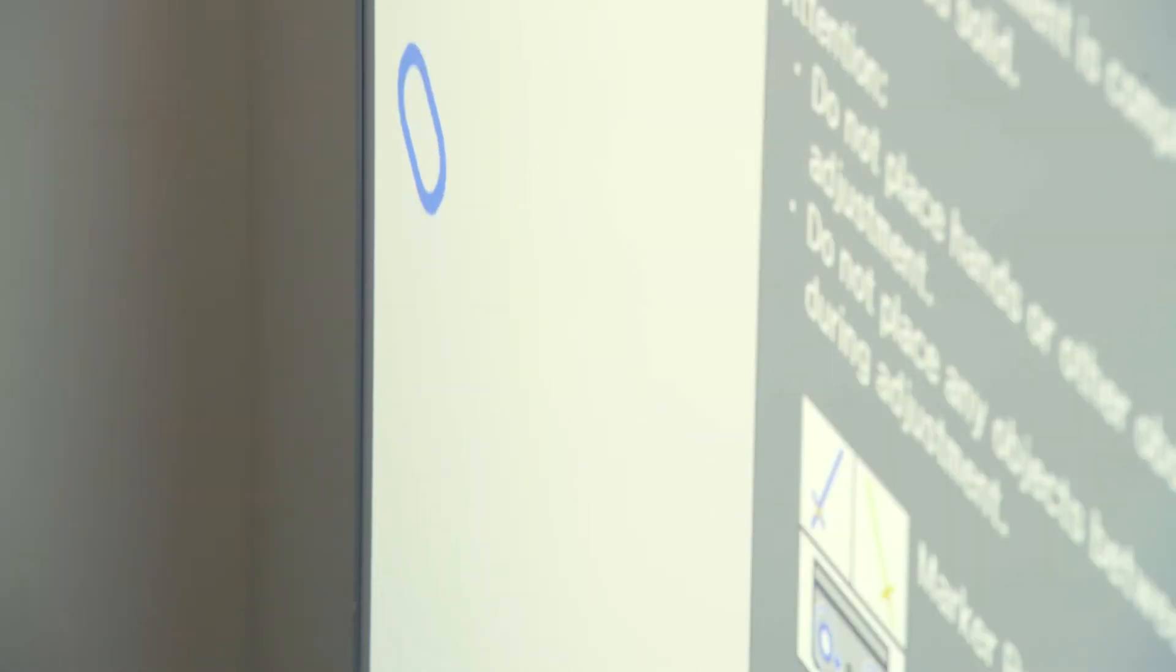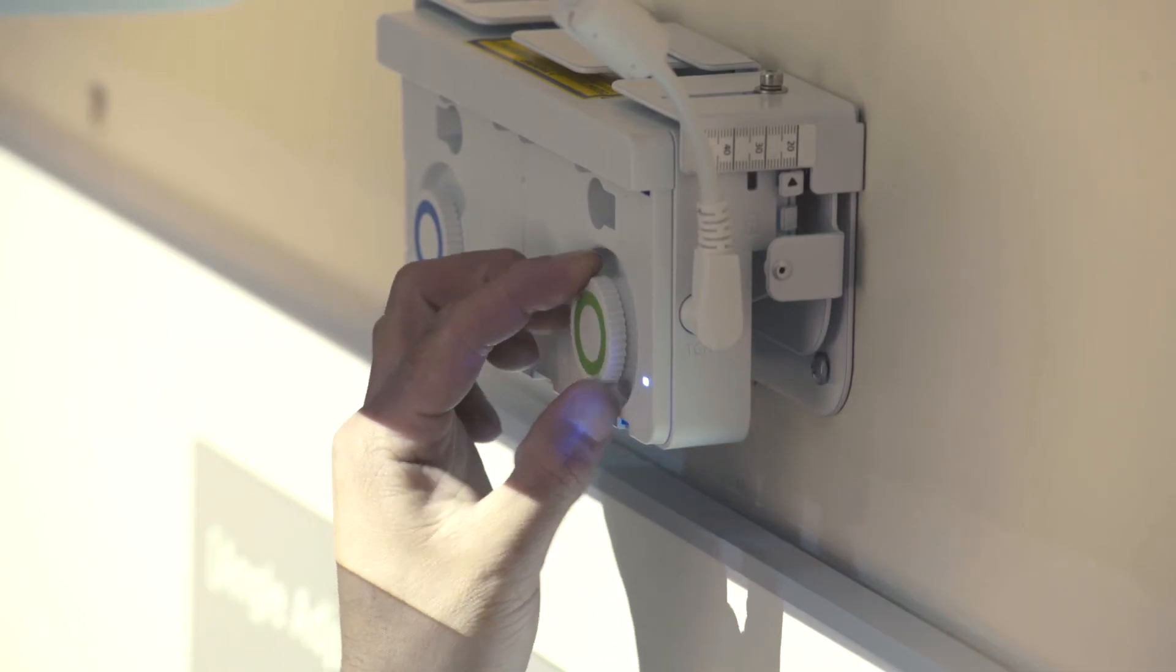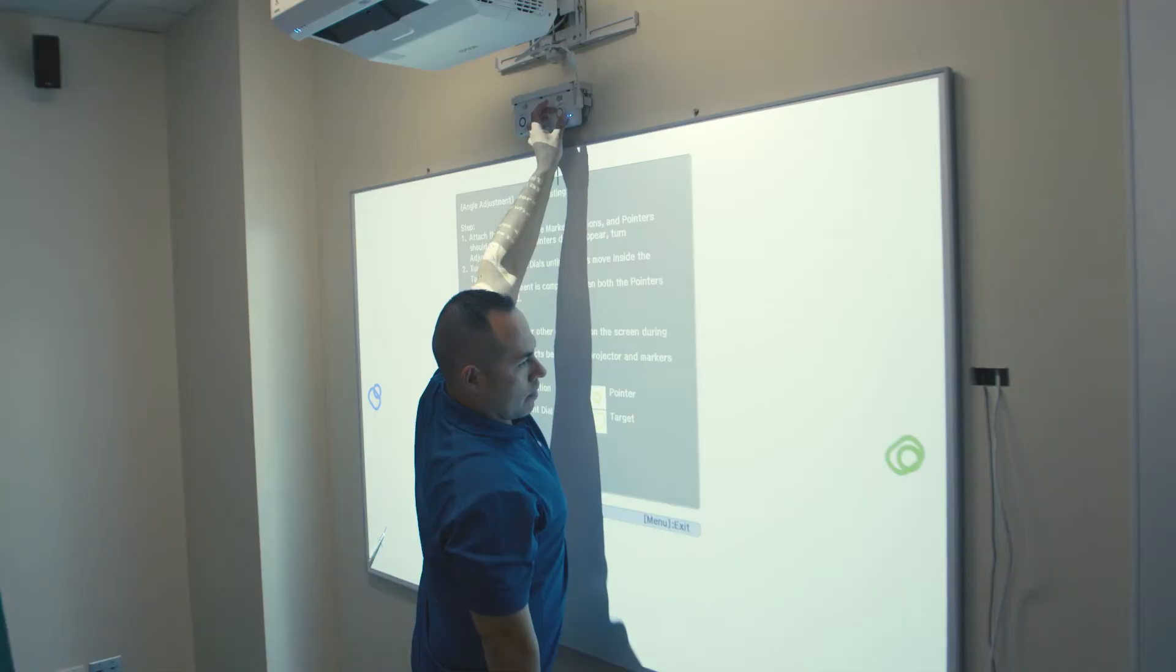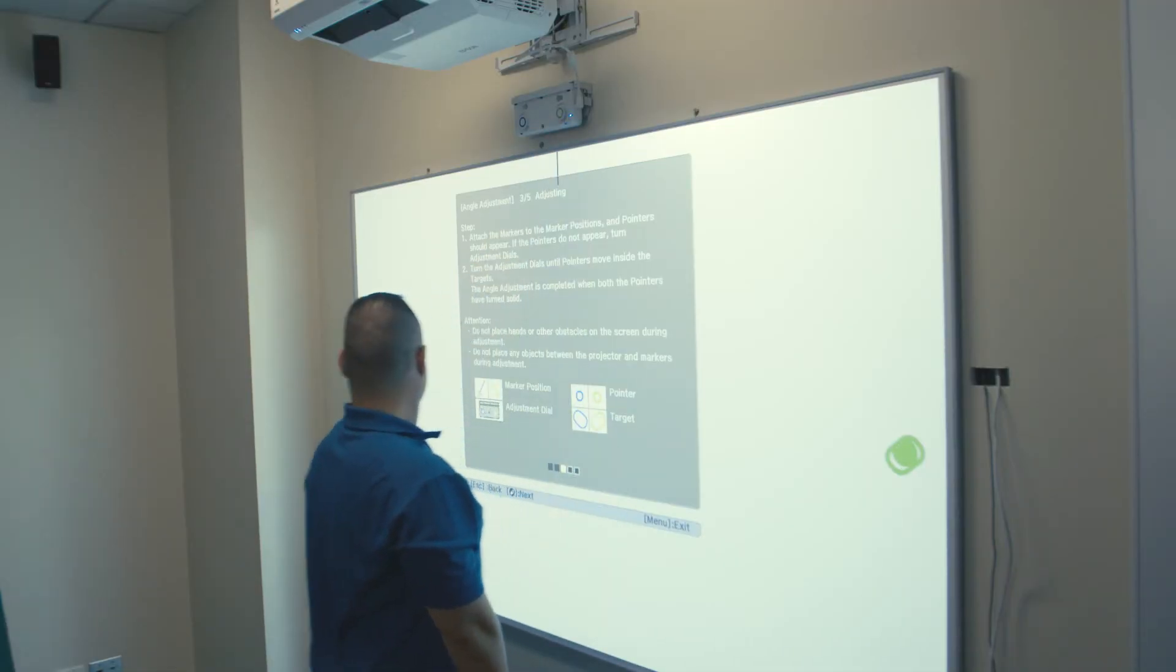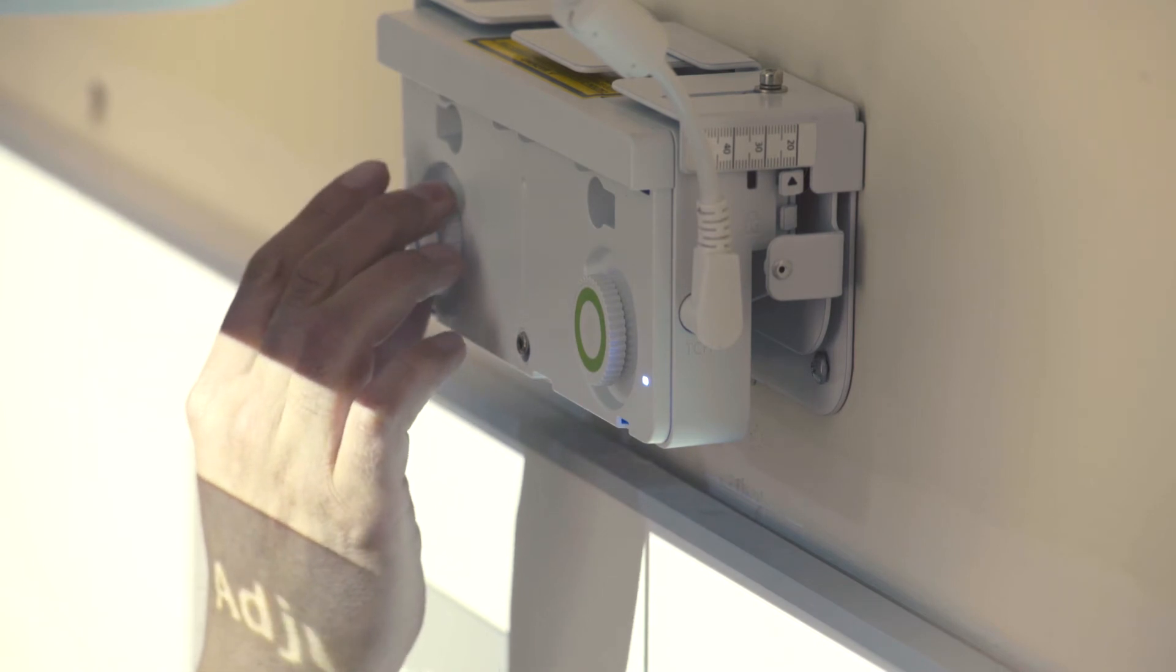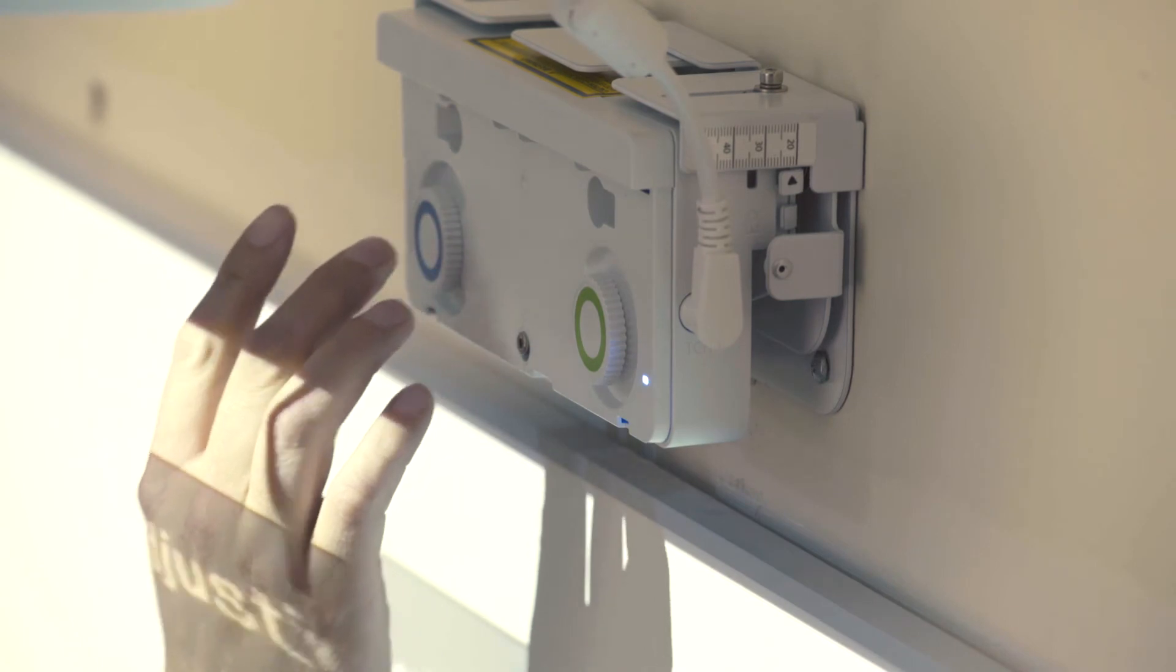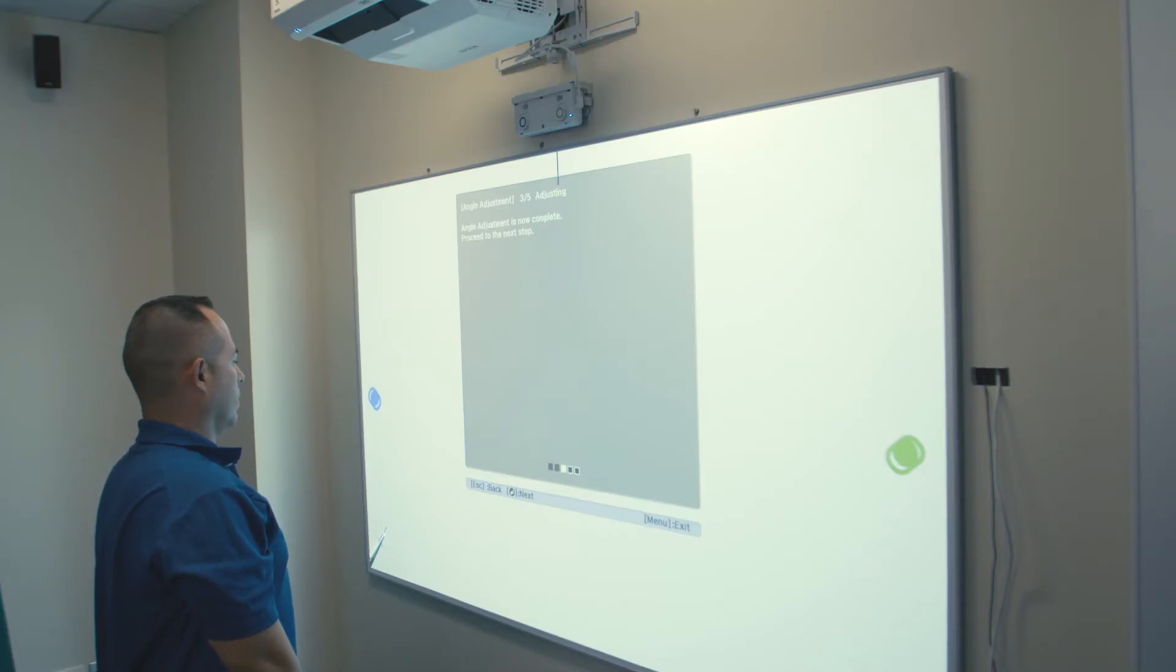Press Enter on the remote to go to Step 3 of Touch Calibration. In this step, you will begin turning the green and blue dials on the touch module until the circular pointers move inside the targets. Once the circles are inside the targets, they will turn solid. Press Enter on the remote to go to Step 4.